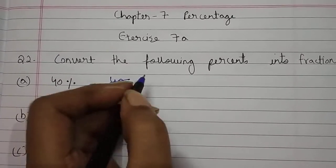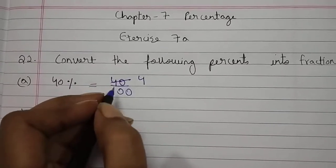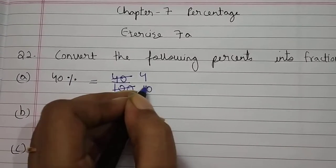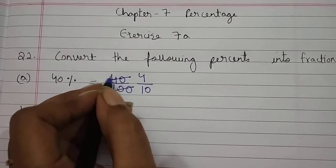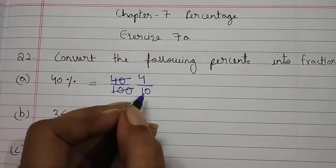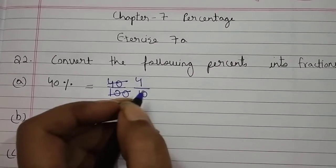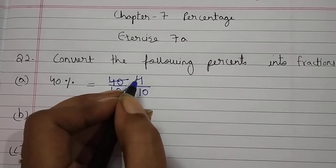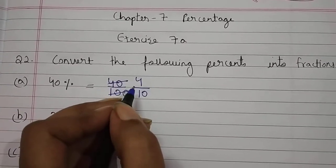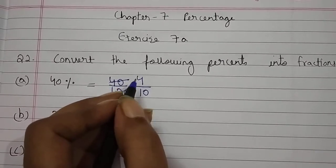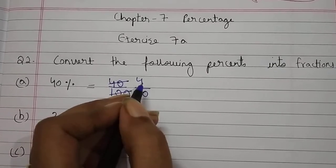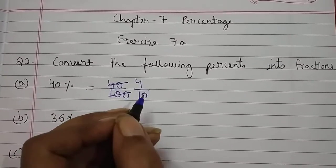क्योंकि 10 की टेबल में 40 भी आता है और 10 की टेबल में 100 भी आता है. 10 into 4 is equal to 40. 10 into 10 is equal to 100. 40 को आप 10 से divide करोगे तो answer आएगा 4. 100 को आप 10 से divide करोगे तो answer आएगा 10. Again we will divide 4 and 10 by 2. हम लोग 4 and 10 को divide करेंगे 2 से. क्योंकि 2 की टेबल में 4 भी आता है, 2 की टेबल में 10 भी आता है.